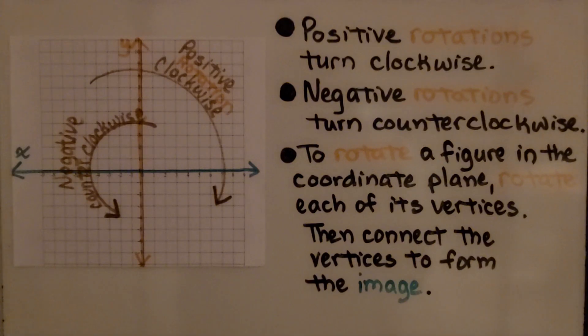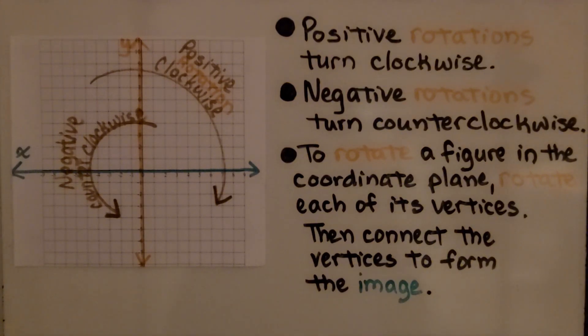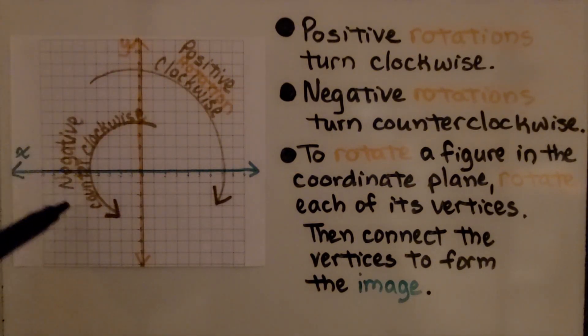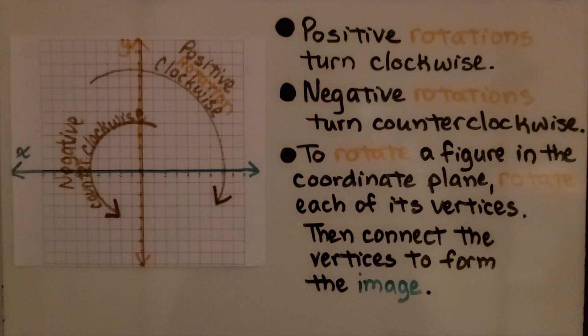Graphing Rotations. We've learned that positive rotations turn clockwise and negative rotations turn counterclockwise. To rotate a figure in the coordinate plane, we rotate each of its vertices.